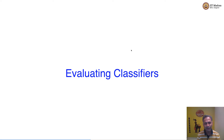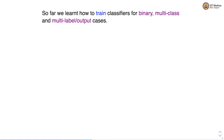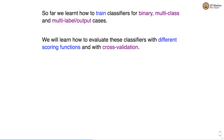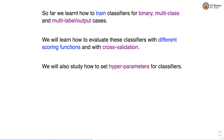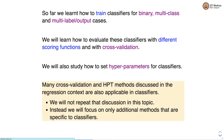Namaste, welcome to the next video of the machine learning practice course. In this video we'll study sklearn utilities for evaluating classifiers. So far we learned how to train classifiers for binary, multi-class, and multi-label output cases. Now we'll learn how to evaluate these classifiers with different scoring functions and with cross-validation. We'll also study how to set hyperparameters. Many cross-validation and hyperparameter tuning methods discussed in the regression context are also applicable to classifiers, so we'll focus only on additional methods specific to classifiers.